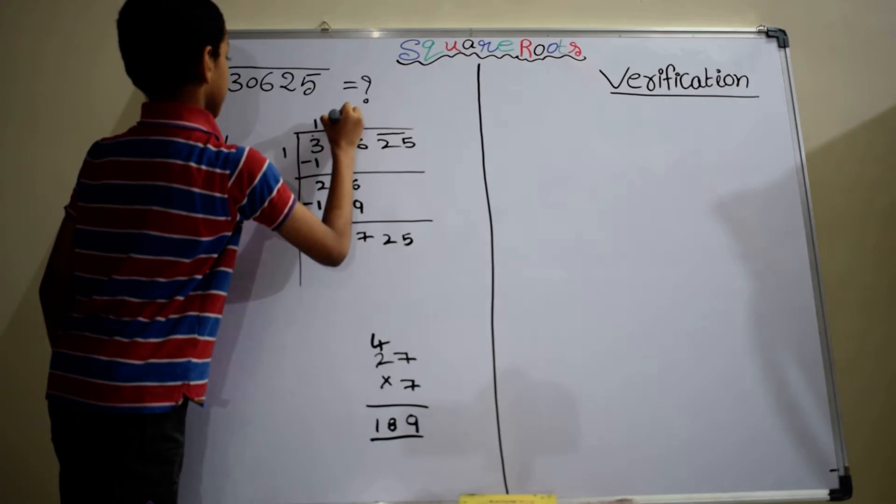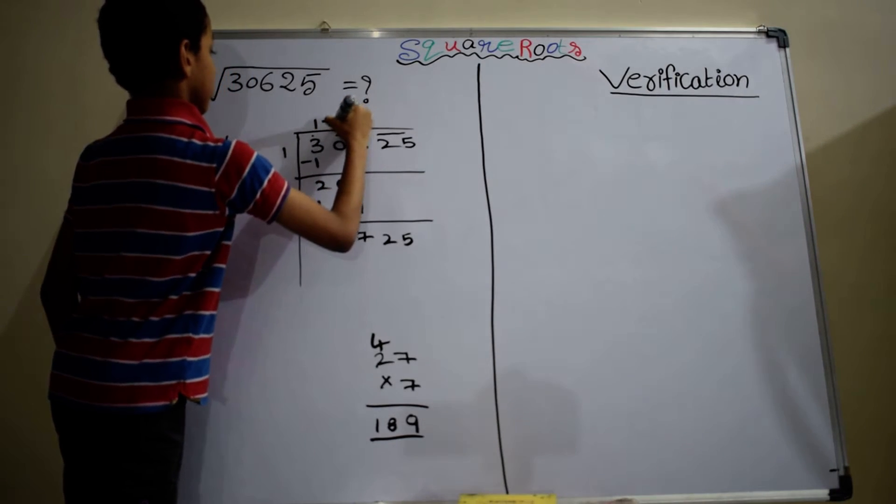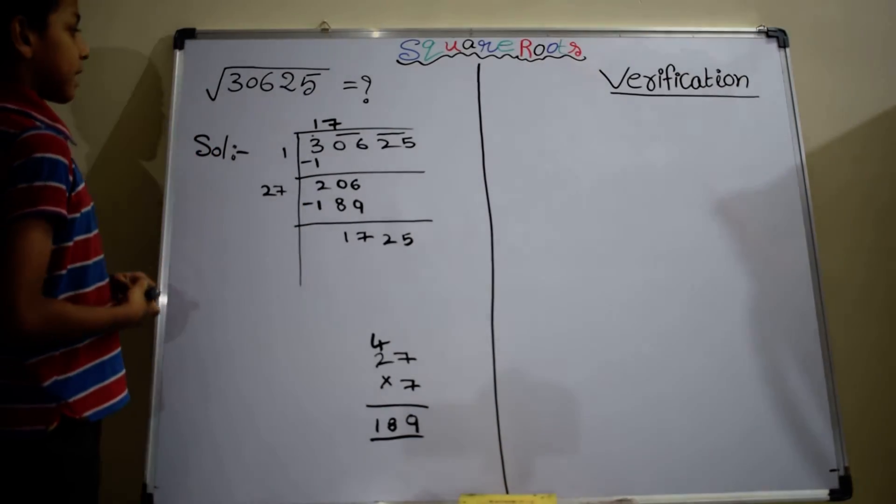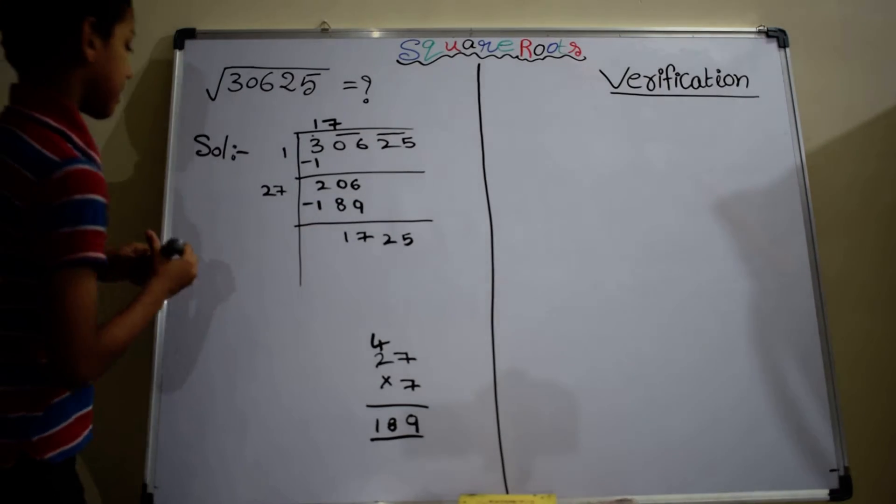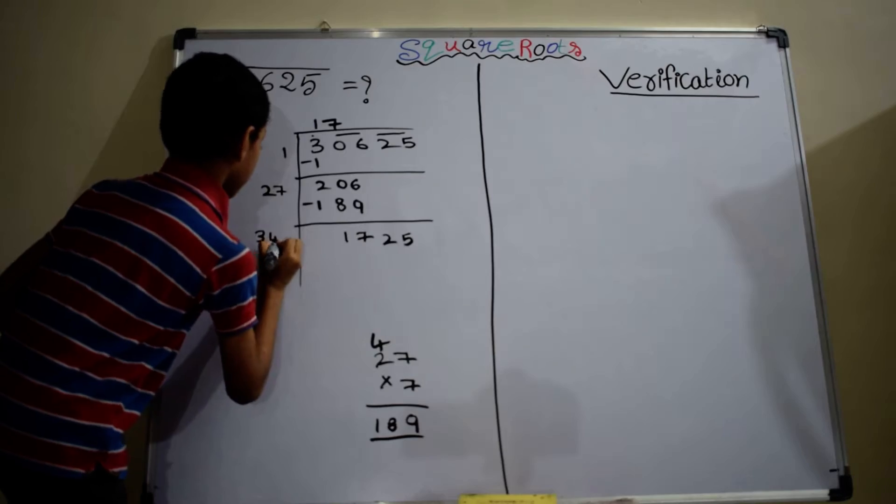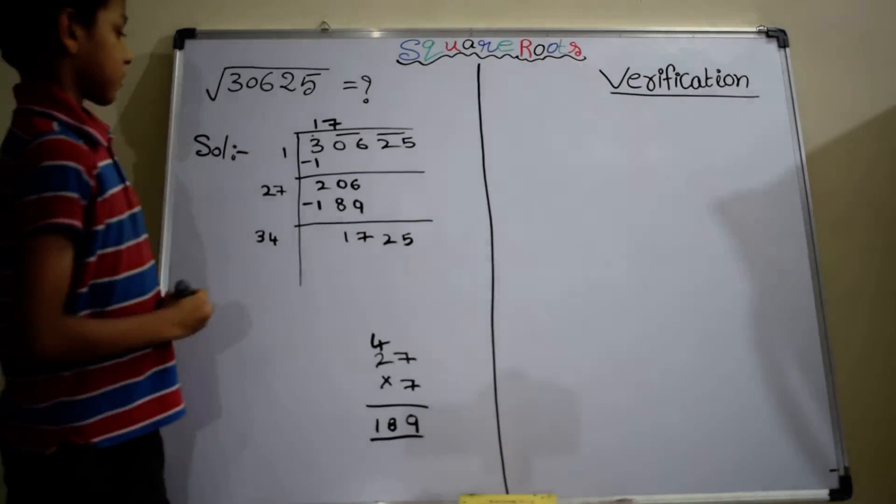Write it here and as well as here. Now, in this step, we have to write the double of the quotient and write it here. It is 34.